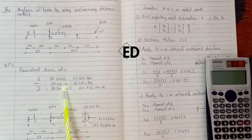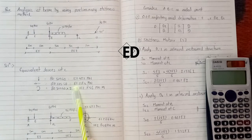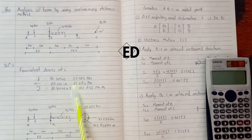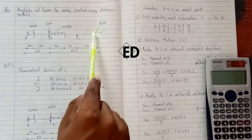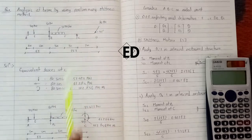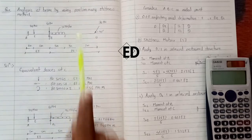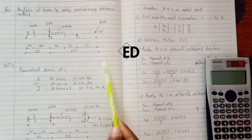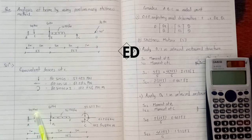The horizontal reaction is 80 cos 40°, acting leftward, giving 61.284 kN. The moment at C due to the point load is 80 sin 40° × 2, giving a moment of 102.842 kNm at C. The question is then modified accordingly.